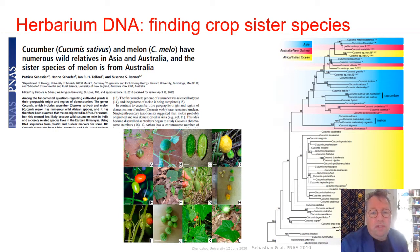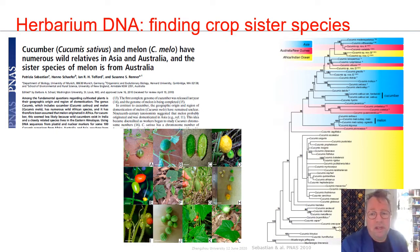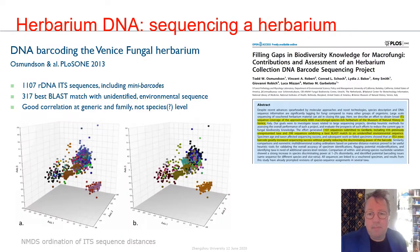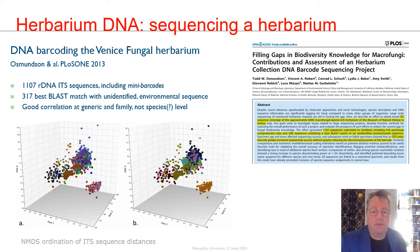In the literature, we've seen some very nice cases — for instance, finding sister species to important crops such as melon, that was only discovered after systematically sequencing herbarium specimens around crop targets. Identifying gaps in sampling, taxonomic mistakes, or name-giving after sequencing an entire fungal herbarium several years ago.